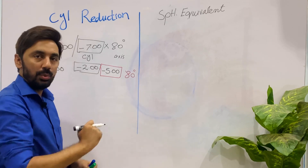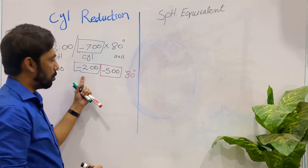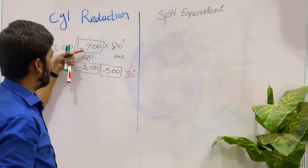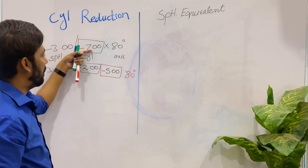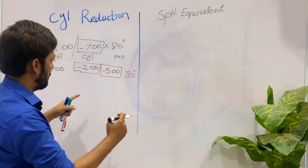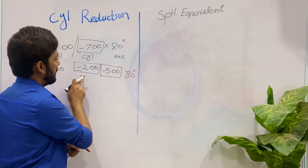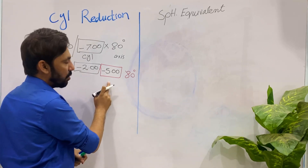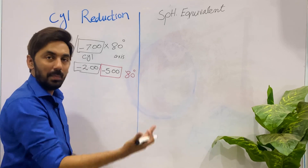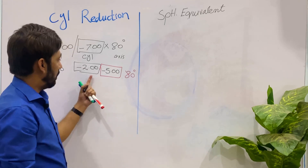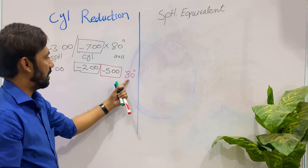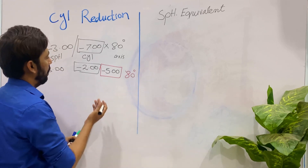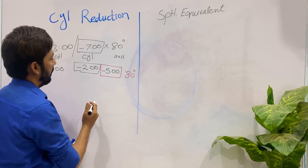So right now our spherical is minus three. We have split the cylinder minus seven into two parts: one is the value of the cylinder which I want to reduce, which is minus two, and the remaining is minus five — the cylinder which I want to prescribe.